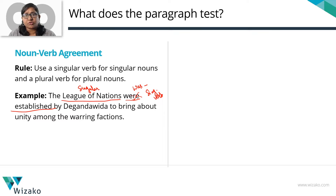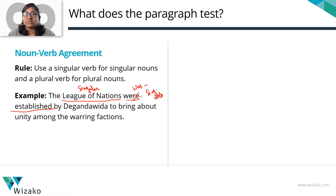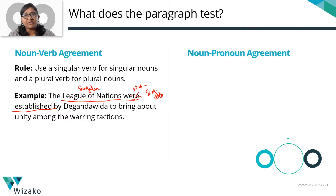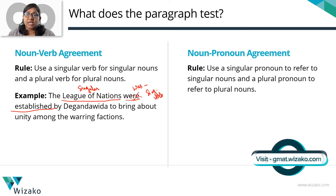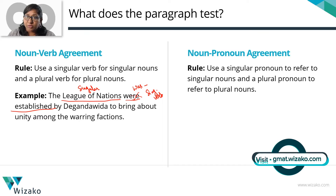There's another video on our YouTube channel that talks about this rule in more detail — the link is given in the description below, so please check that out as well. When I say there has to be agreement in terms of number, we also mean it in terms of the noun and the pronoun. Similar to noun-verb agreement, if you have a noun and you're using a pronoun to point at it or replace it, then that noun and pronoun should agree in terms of number. Use a singular pronoun for a singular noun, and a plural pronoun for a plural noun.